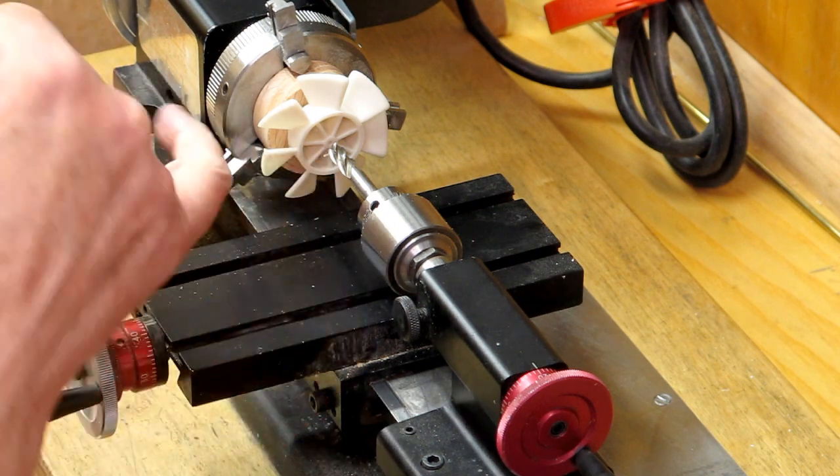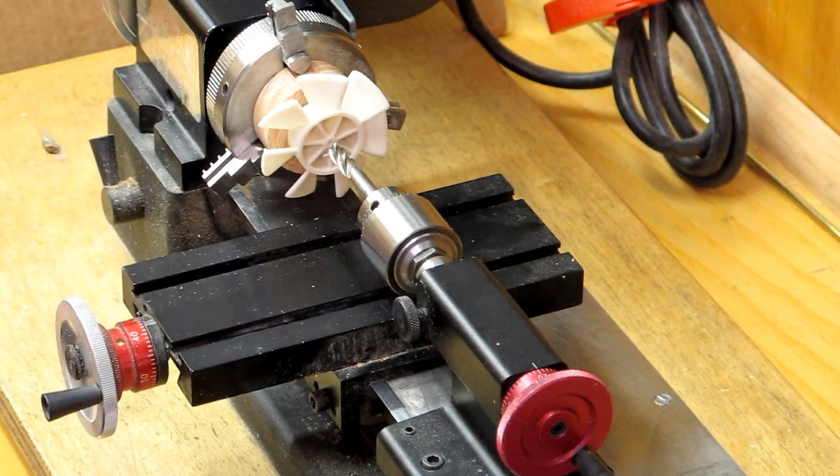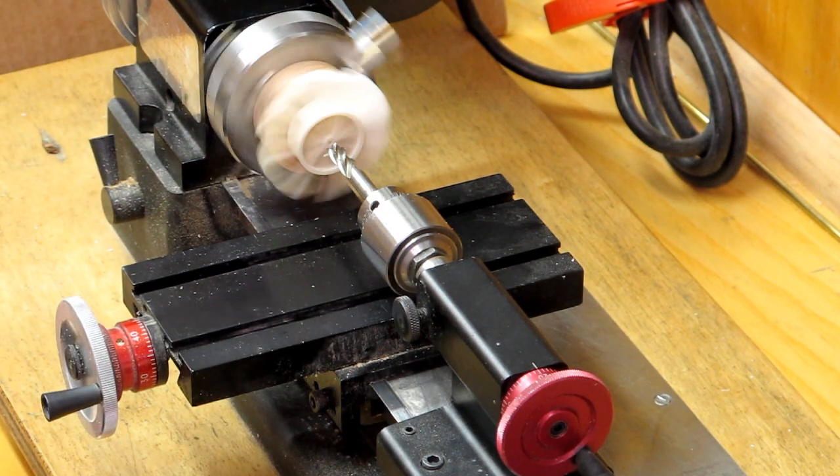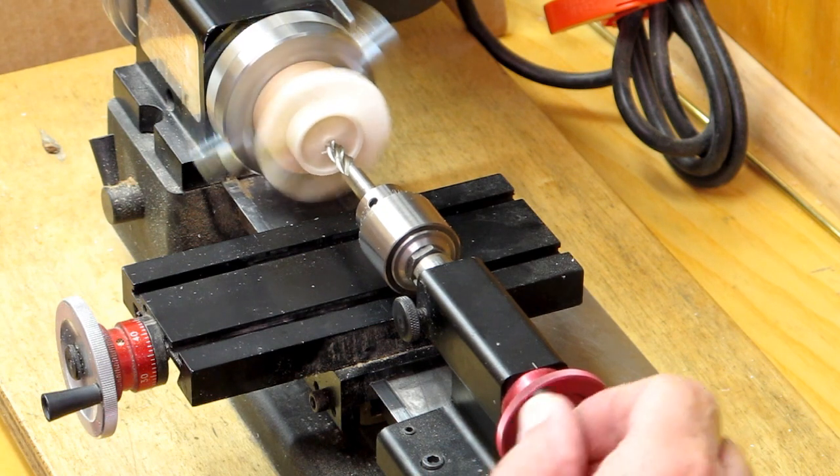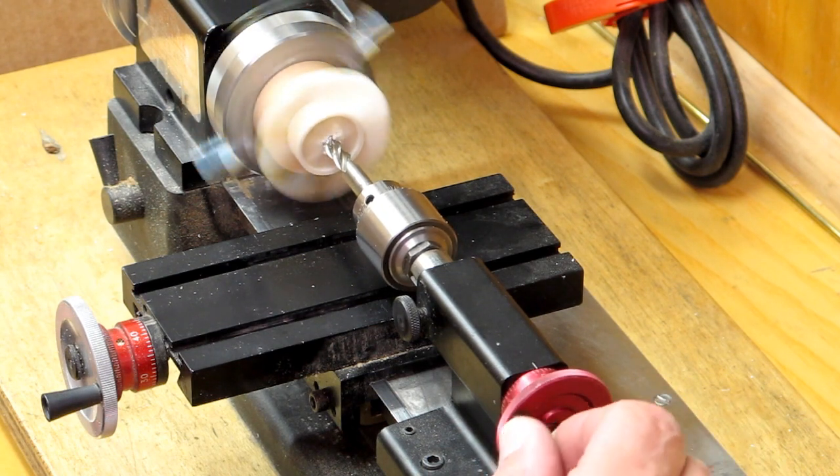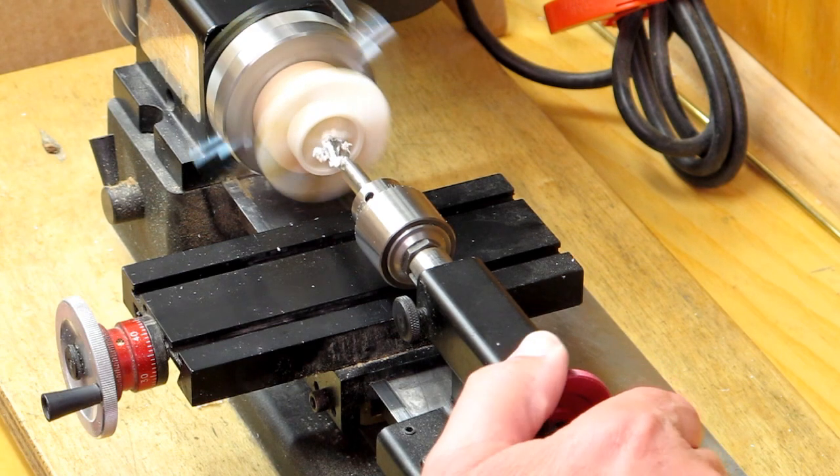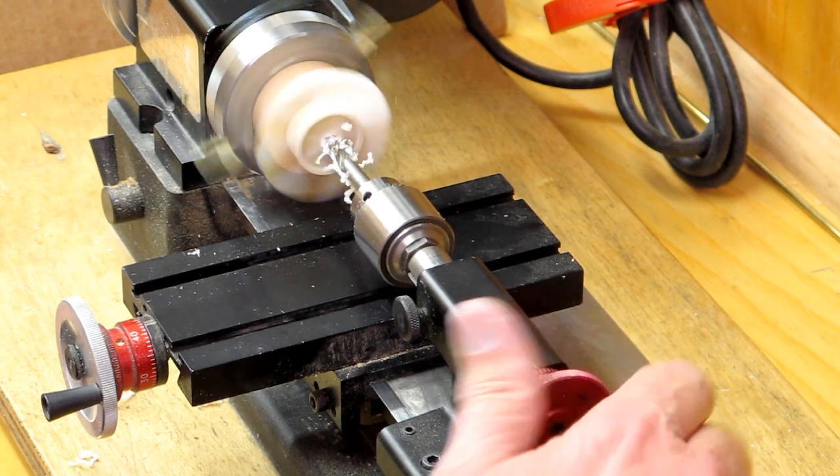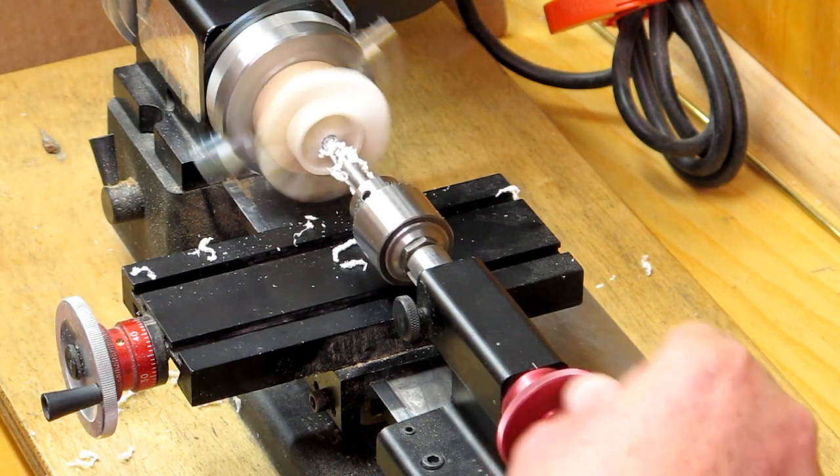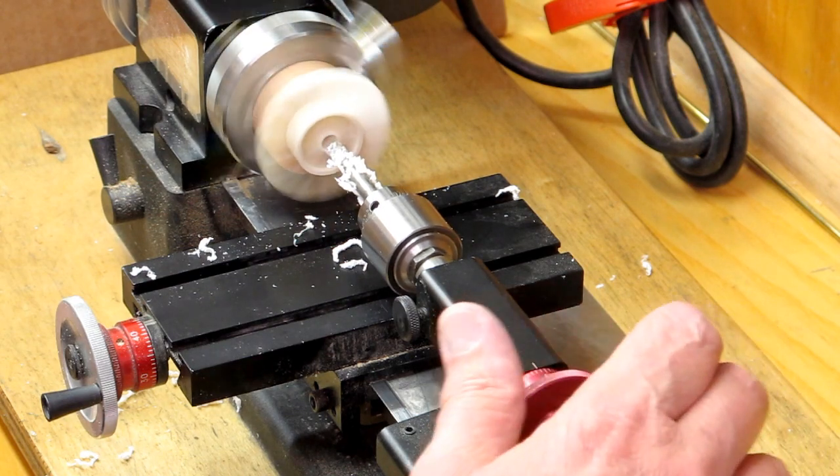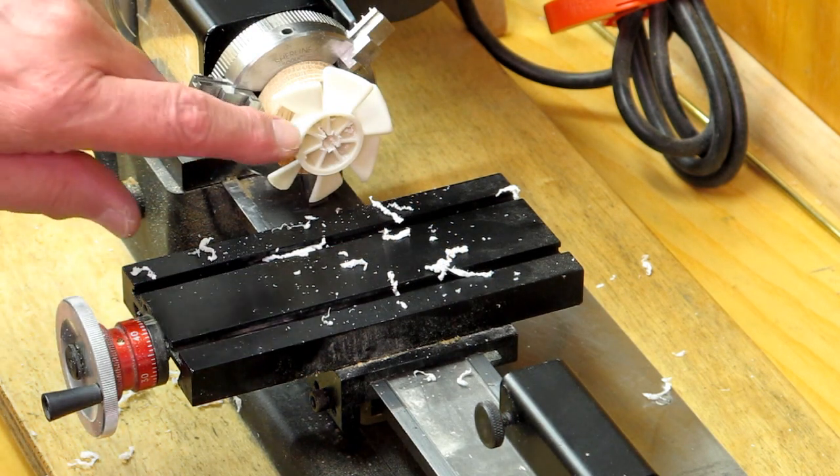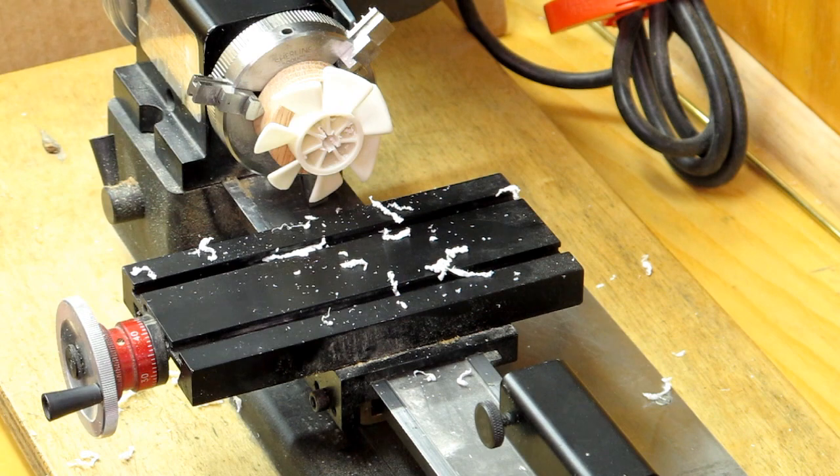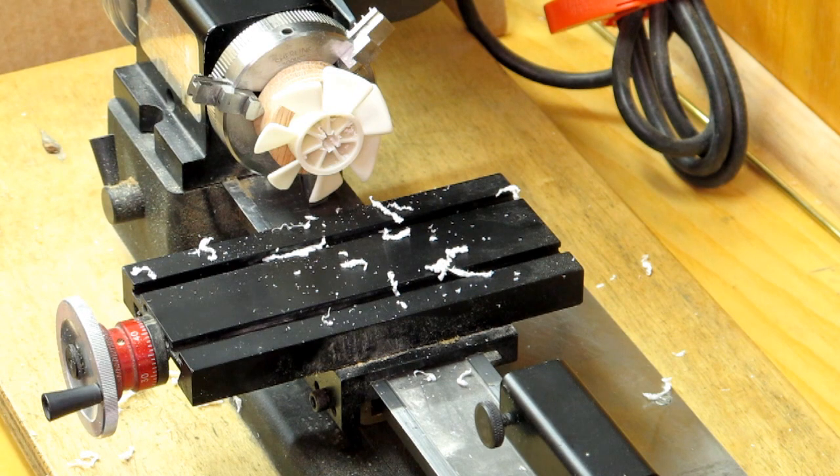I'm going to use a mill to remove the center of that fan hub. I wanted to remove that center so I can get in here with a boring bar and remove all of these webs.